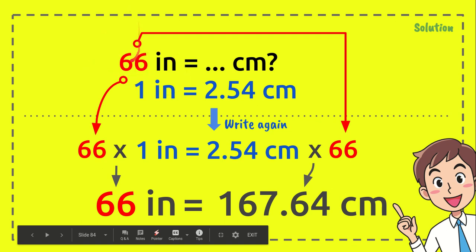So 66 inches equals 167.64 centimeters. And that's all of it. Thank you so much for watching.